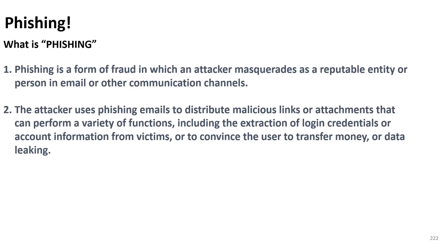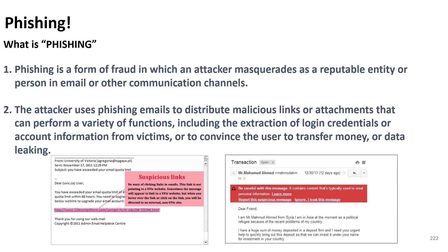Phishing emails usually include elements that help us detect whether an email is legitimate. For example, if you receive an email from someone claiming to be from Google, check how the domain name is written — ensure it is really google.com. Also check any link being shared; it should point to a Google-related domain, not a garbage URL such as the one shown on the screen.